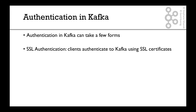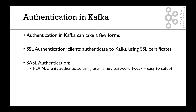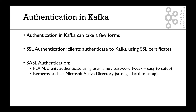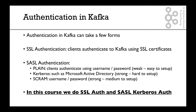Authentication can take a few forms in Kafka. You can do SSL authentication, where a client authenticates using SSL certificates. There is also SASL authentication: Plain, using username and password; Kerberos, which is the most difficult and most common, using something like Microsoft Active Directory; and Scram, which is username and password but stronger than plain. In this course, we will do SSL authentication and SASL Kerberos authentication, since plain and Scram are similar and easier to set up.